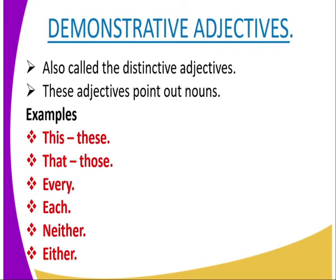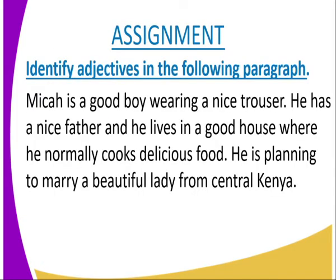The next type is demonstrative adjectives. These are adjectival words used to point out nouns — they are also called distinctive adjectives. In their singular form we have 'this,' and in the plural form we have 'these.' We also have 'that' in the singular form and 'those' in the plural form. Words like 'every,' 'each,' 'neither,' and 'either' are also used as demonstrative adjectives.